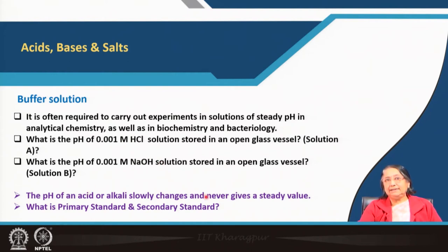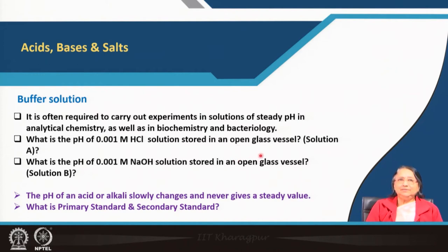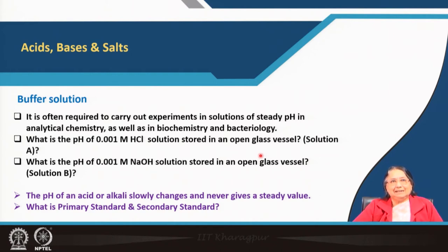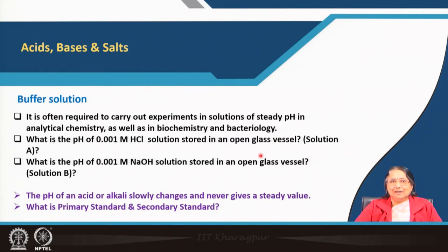The pH of the acid or alkali slowly changes and never gives a steady value. Why? First, depending on the glass vessel, if it is an alkaline glass, some alkali may leach out and react with the acid, giving a different pH. Also, since it is an open vessel, carbon dioxide or ammonia from the atmosphere may dissolve in the water and change the pH. So pH will not be constant with time — it will change.